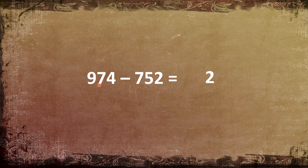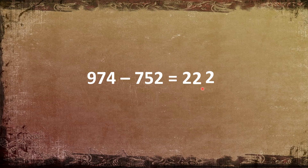7 minus 5 is equal to 2. 9 minus 7 is equal to 2. So the answer will be 222. 974 minus 752 is equal to 222.